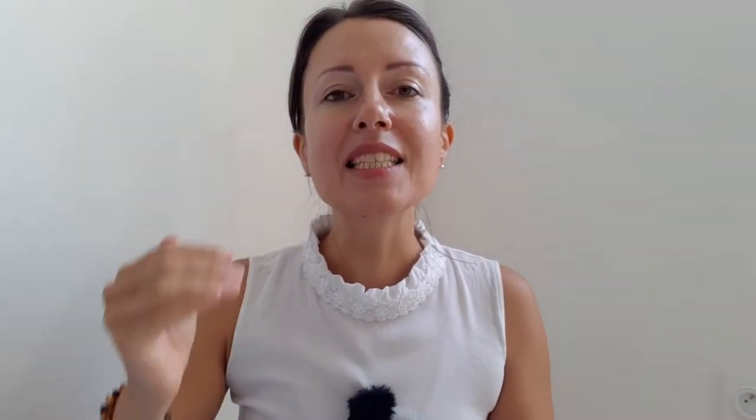We have nouns, we have determinants — now let's introduce adjectives. Most of the time, adjectives in French come after the noun: determinant, noun, then adjective. For instance, if I want to say 'a grey cat,' in English I have 'grey' before 'cat,' but in French I'm going to have gris after chat: un chat gris — a grey cat. Together: un chat gris. Easy, isn't it?